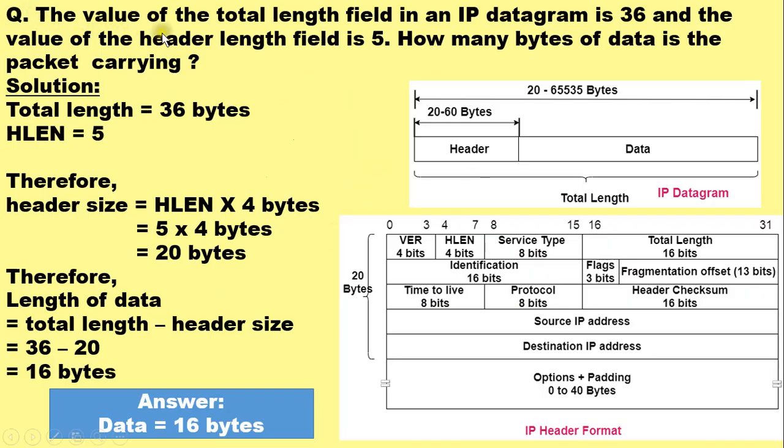The example is: the value of the total length field in an IP datagram is 36 and the value of the header length field is 5. How many bytes of data is the packet carrying? Now to solve this example you should know the IP datagram structure and the header structure of IPv4. The IP datagram has header followed by data.